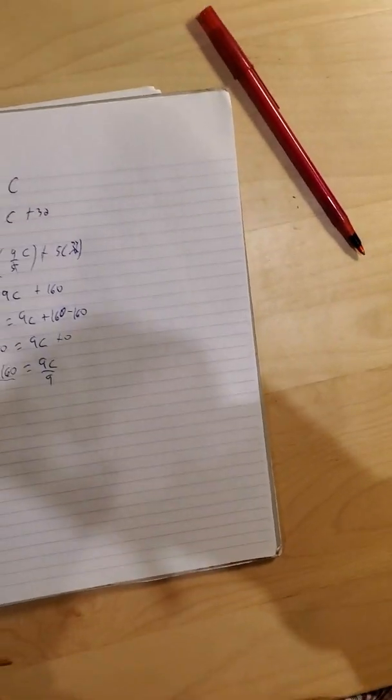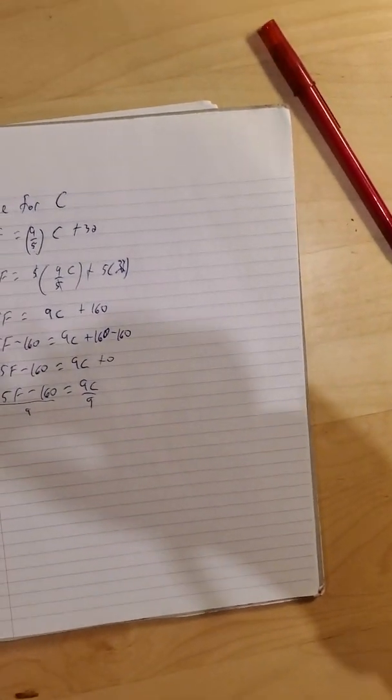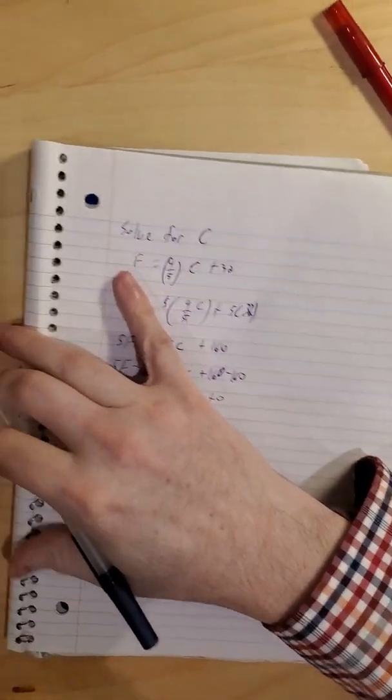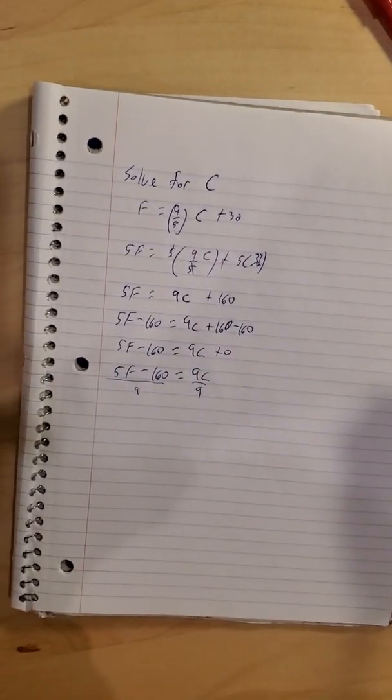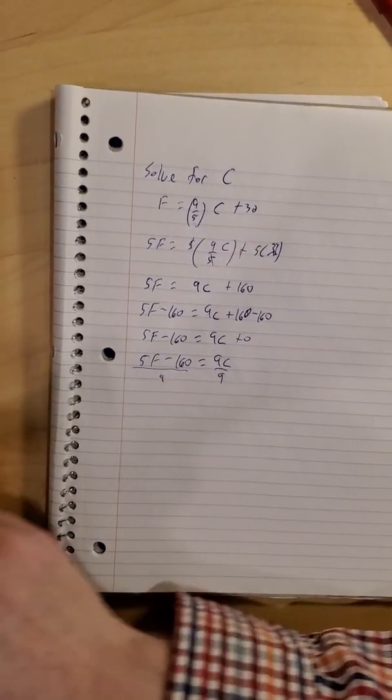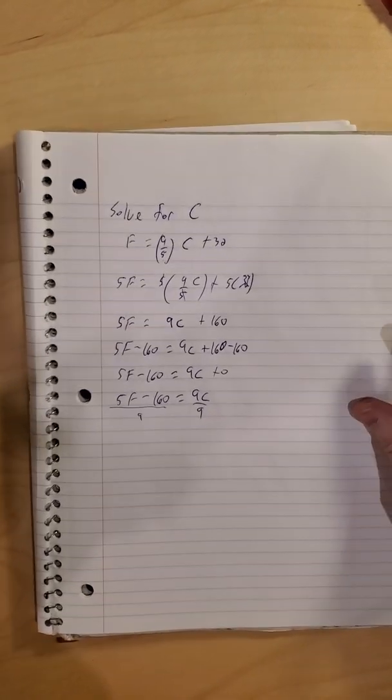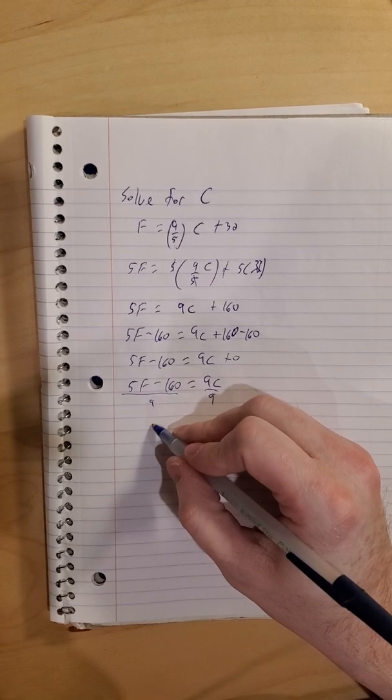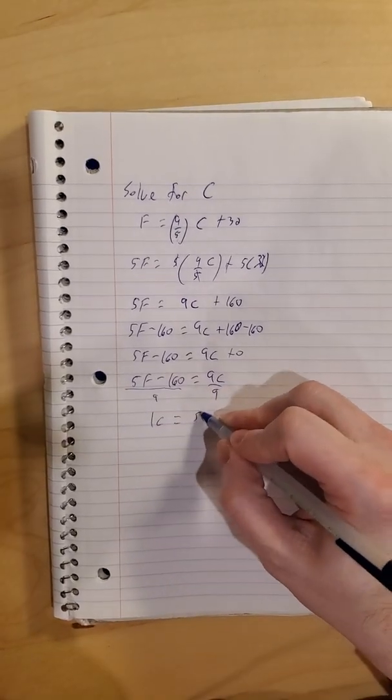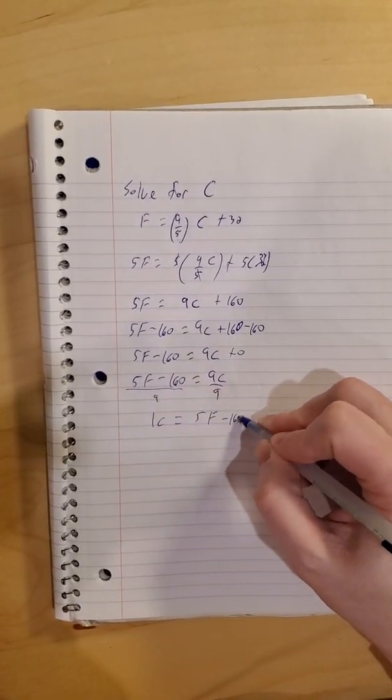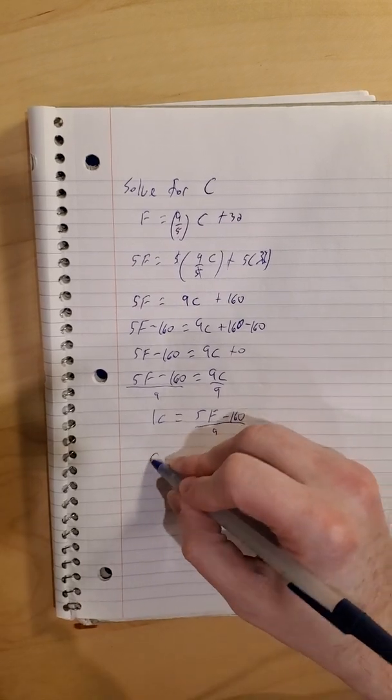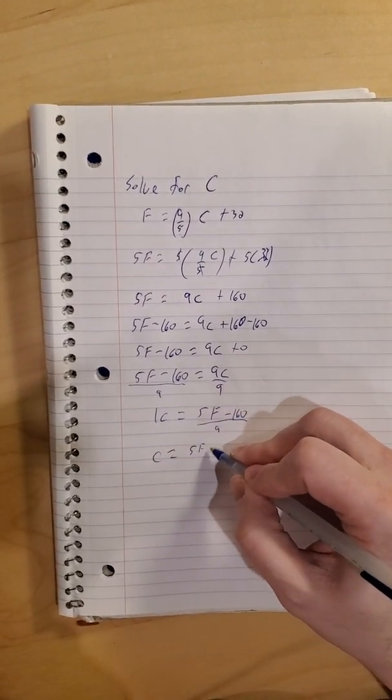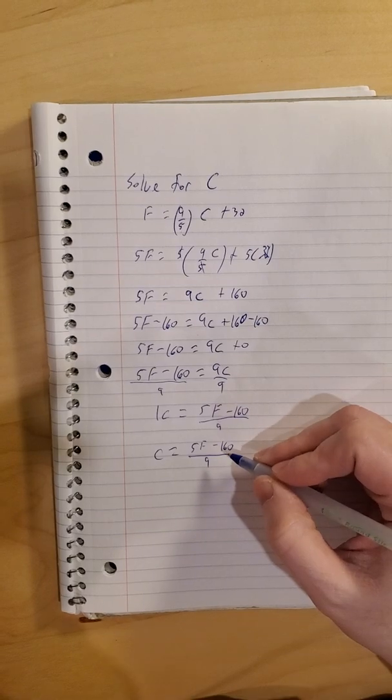So we'll finish it off. We'll divide both sides through by nine. Then one times C is five F minus 160 all over nine. So C is five F minus 160 all over nine.